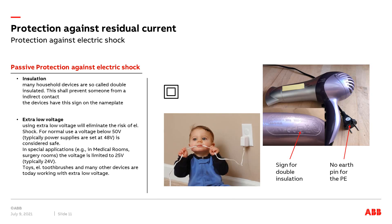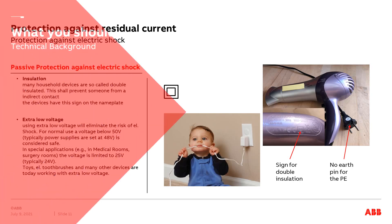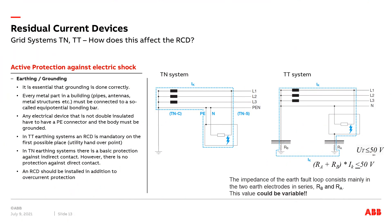Most electric toys operate at 12V or less. In a TN earthing system, one point of the transformer is connected to earth, usually the star point in a three-phase system. The body of the electrical device is connected to earth via this earth connector at the transformer. In case of a fault with the phase connected to the body of the device, the protection device — for example an MCB — will trip. RCDs provide additional protection in cases where the connection is not solid enough to trip the MCB, or in case of direct contact.